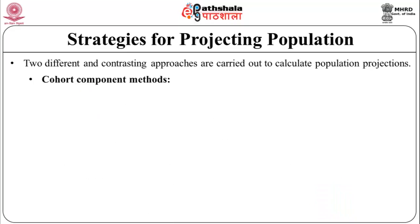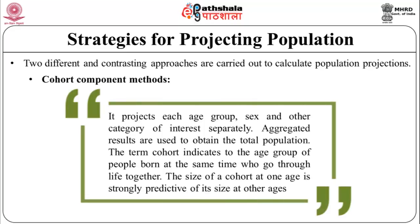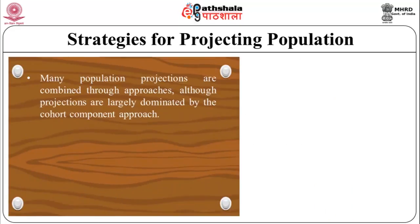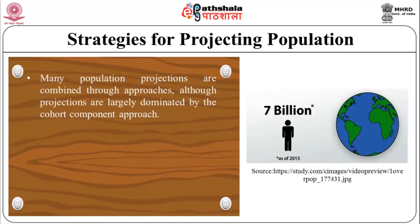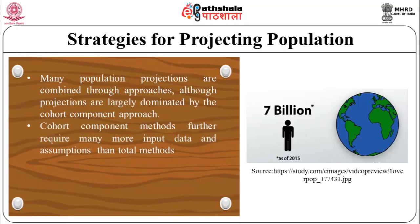The second approach is the cohort component method, which projects each age group, sex, and other category of interest separately. Aggregated results are used to obtain the total population. The term cohort refers to the age group of people born at the same time who go through life together. The size of a cohort at age 1 is strongly predictive of its size at other ages. Many population projections combine both approaches, although projections are largely dominated by the cohort component approach. Cohort component methods require many more input data and assumptions than total methods.